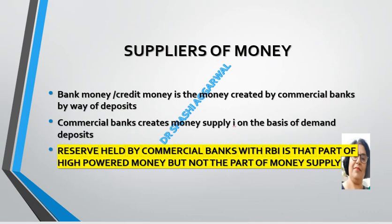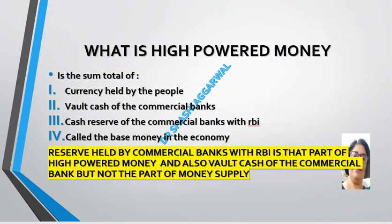The supply of money also covers credit creation, or bank money, which is created by commercial banks against deposits. Reserves held by commercial banks with the RBI are part of high powered money but are not included in the money supply. High powered money is the sum total of currency held by the people, vault cash of commercial banks, and cash reserves of commercial banks with the RBI. High powered money is also called base money, but vault cash and reserves of commercial banks are not included in money supply.